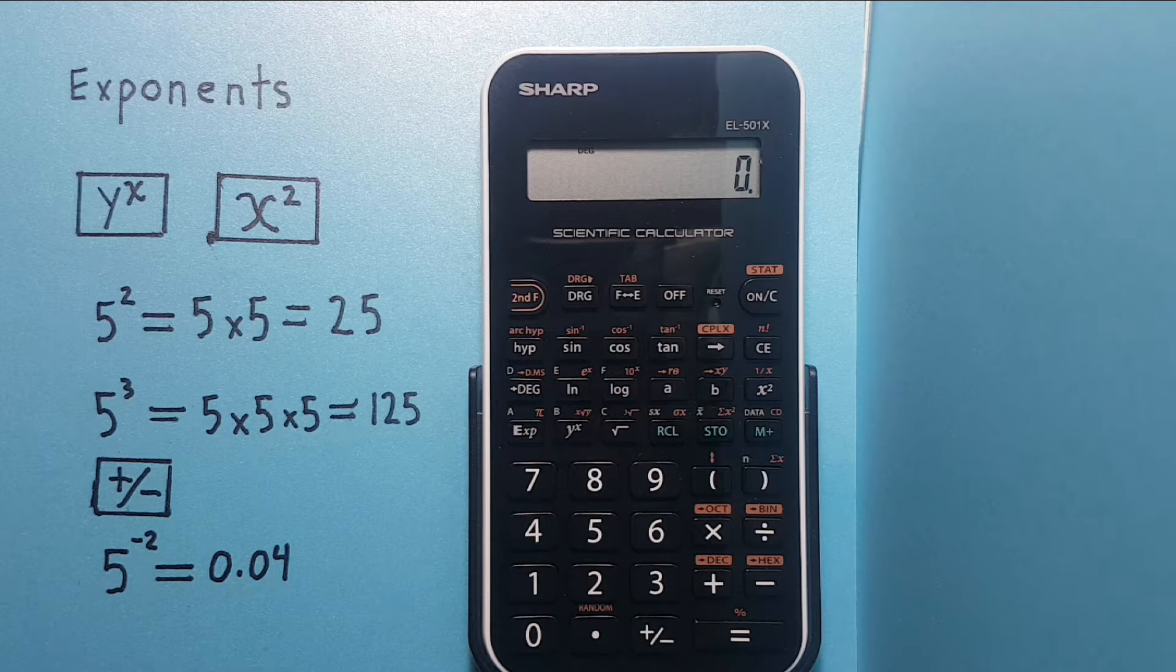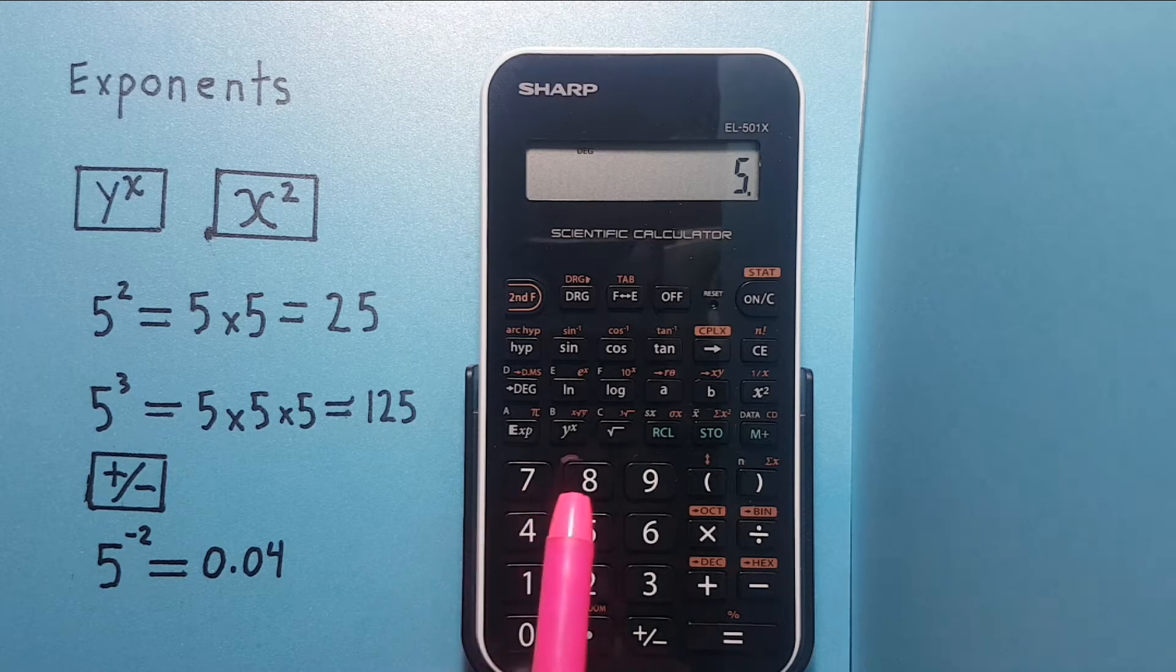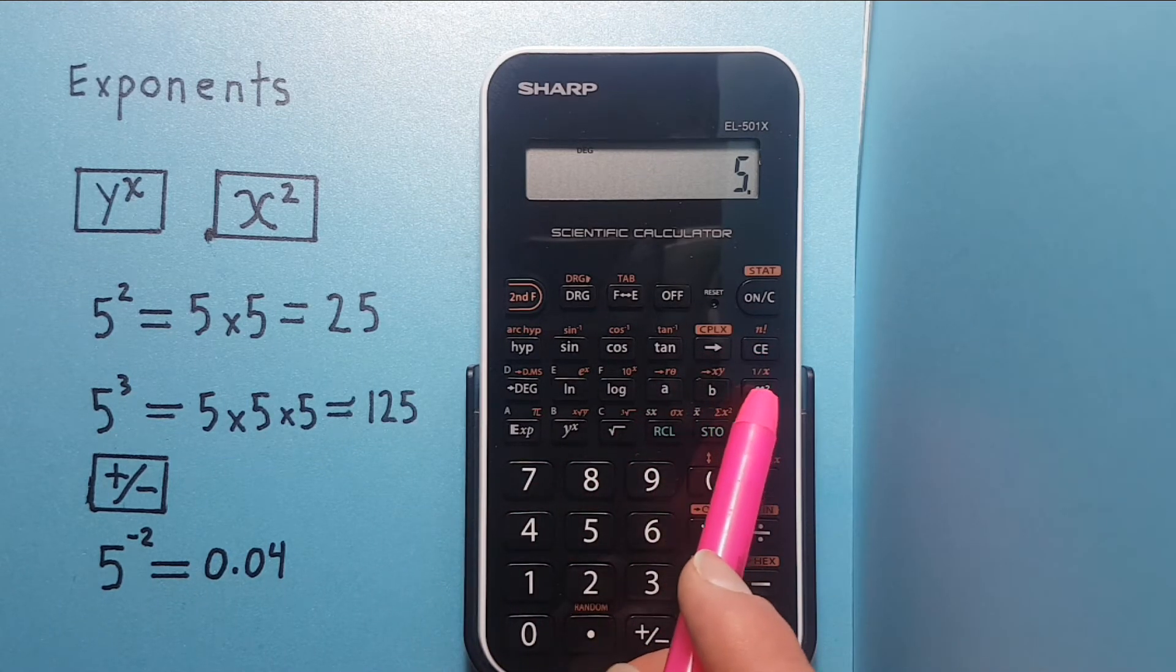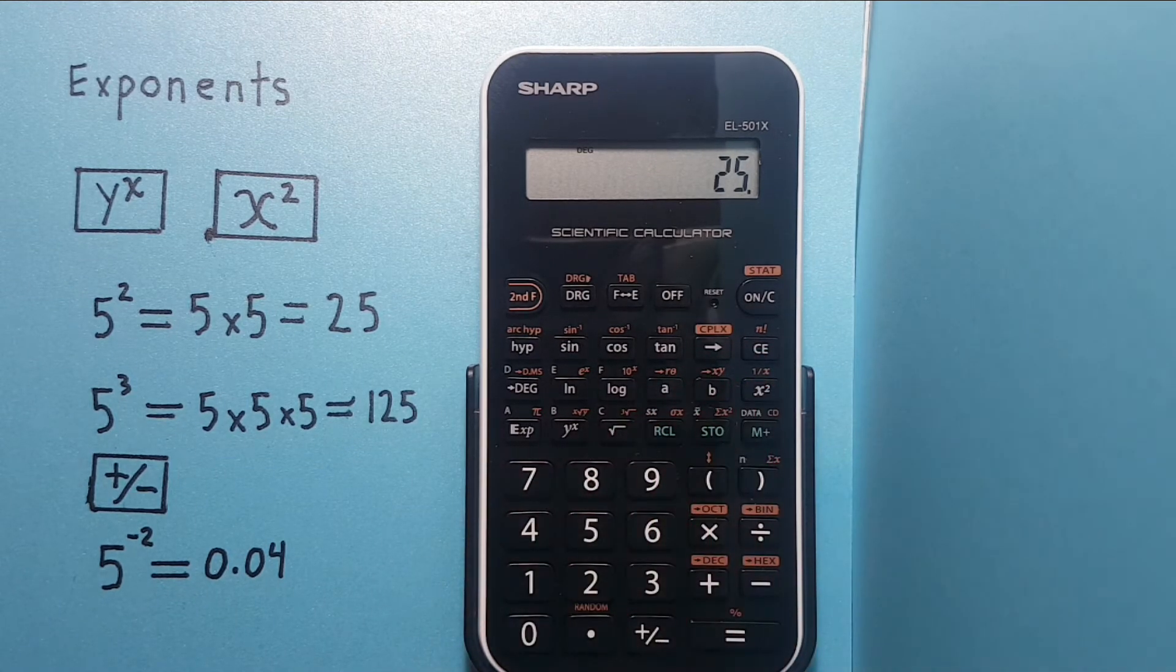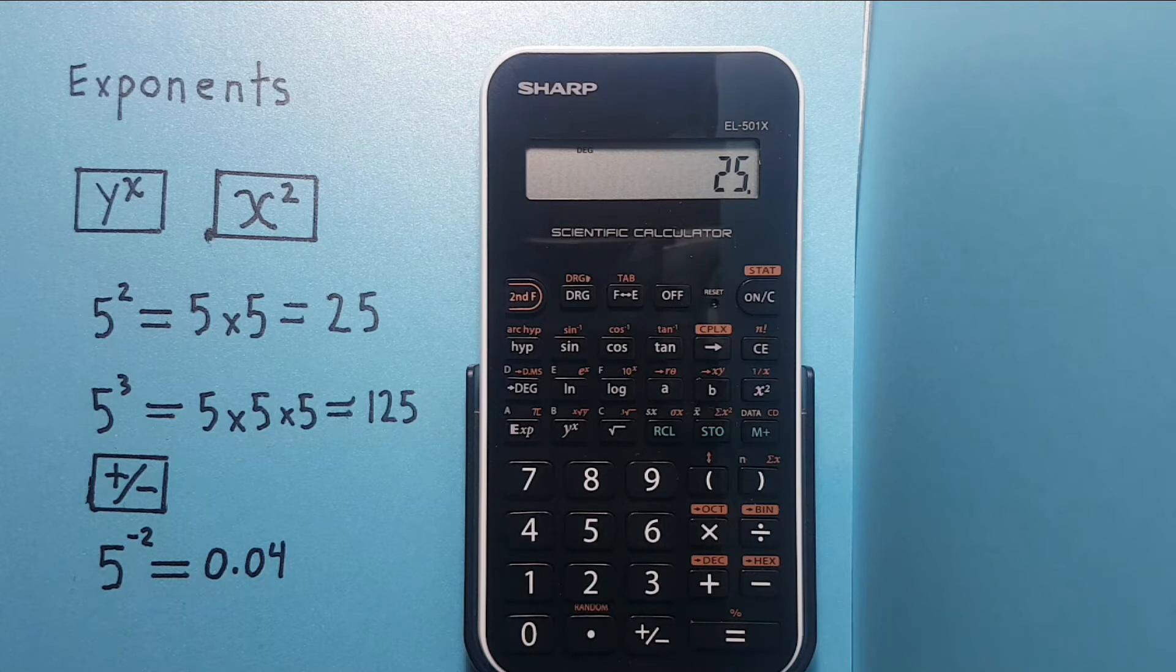Alright, if we simply want to square a number, you would enter the number 5 and then the x squared button. There we have 5 squared which is 25.